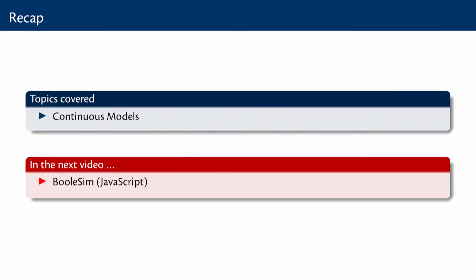In this video, I hope you got a good overview of continuous models and also a nice summary of the different kinds of models one can use for modelling gene regulation — when to use them, the efforts involved in modelling, and the outputs you get. In the next video, we will do a lab using a simple JavaScript-based tool called BoolSim to simulate a simple Boolean network.